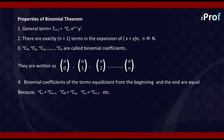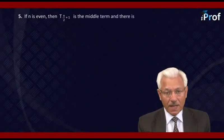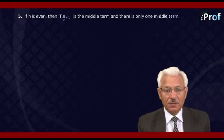In general, NCR equals NC(N-R). If N is even, then T(N/2)+1 is the middle term, and there is only one middle term in this case.